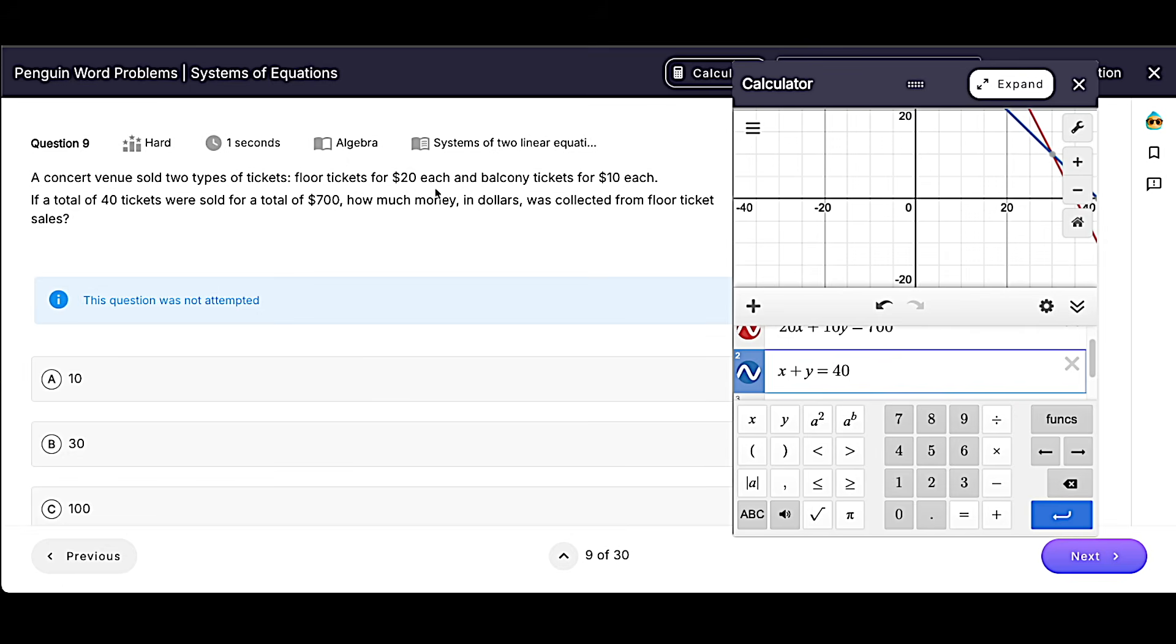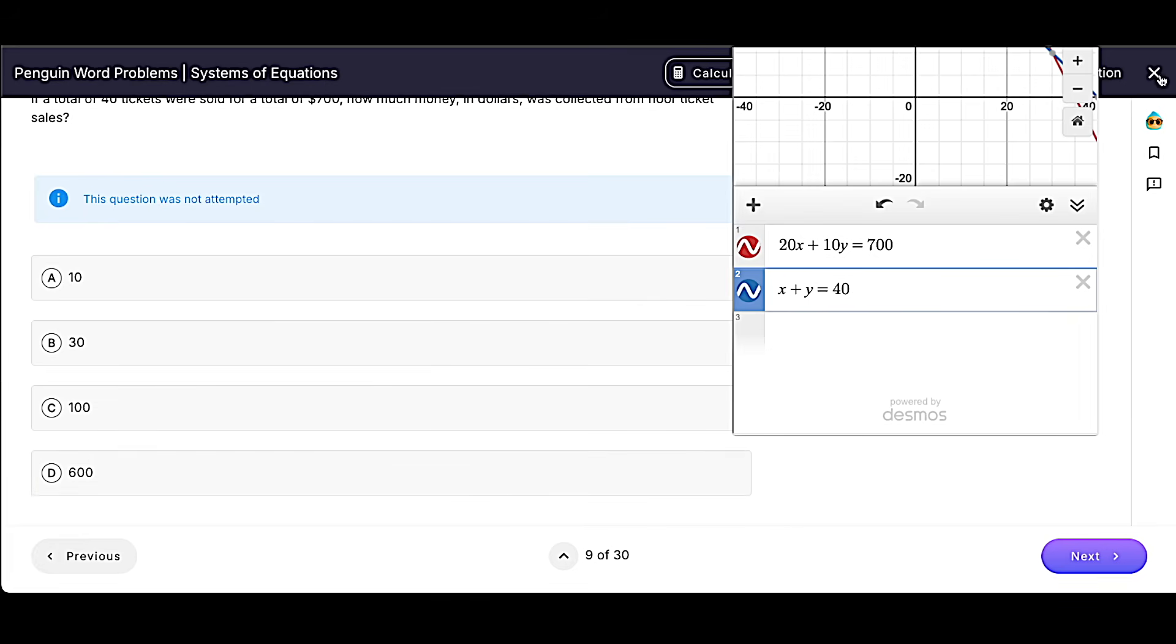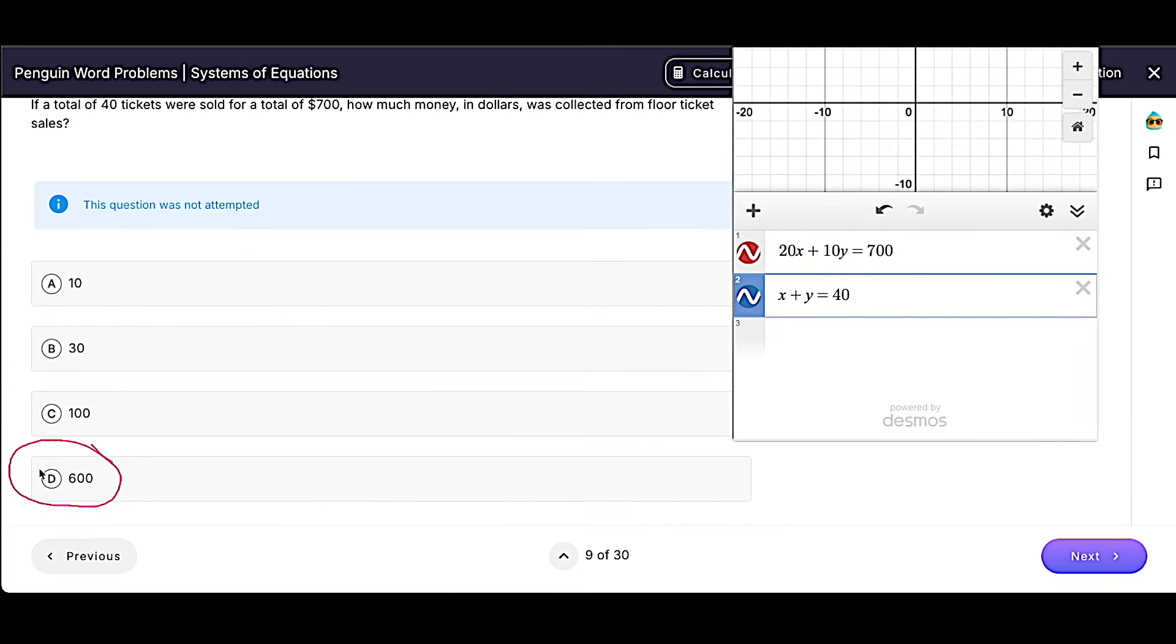So remember, floor tickets was X. So that's X being 30. But then we have to multiply 30 by 20. 30 times 20 is going to be 600. So our answer for this one should be choice D.